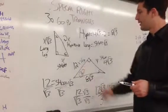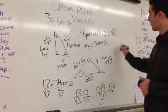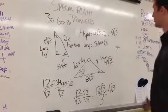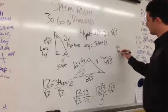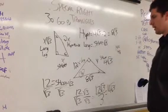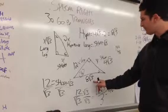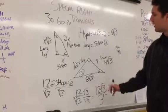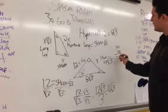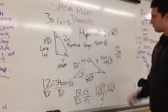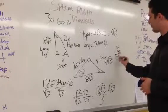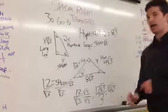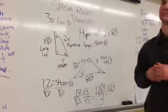12 squared is 144. 4 square root 3 squared is 16 times 3, which is 48. And 8 square root 3 squared is 64 times 3, which is 192. And there we go — that checks out. So that's Special Right Triangles 30-60-90, part 2.